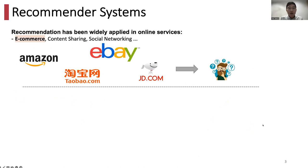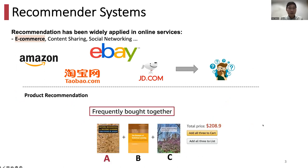For example, from e-commerce, we know Amazon, eBay, and in China we have Taobao and Jingdong. Here is an example from Amazon — this is the most frequent recommendation scenario. When you want to buy a product like a book, the system will recommend a package of books A, B, and C that are frequently purchased together.